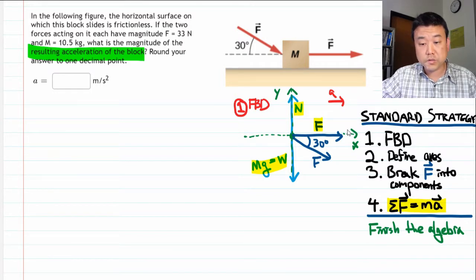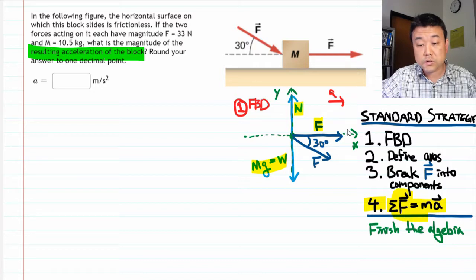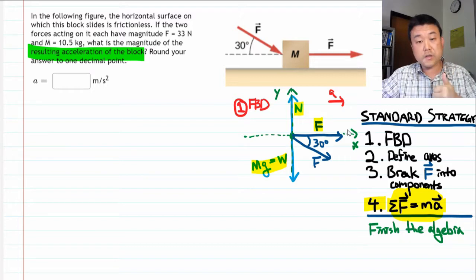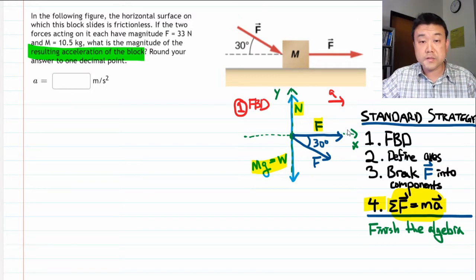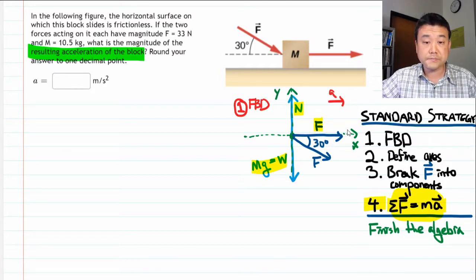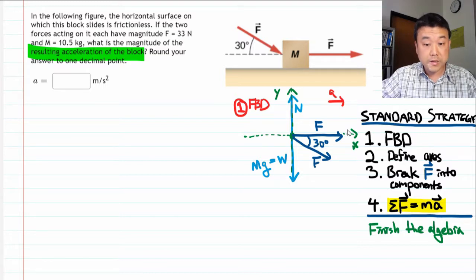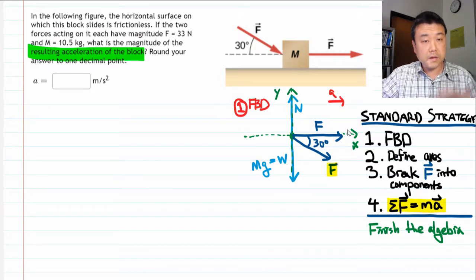The reason we break forces into components is to prepare for the next step, step number four, where the Newton's second law equation gets written each time for each direction, once for x-axis and once for y-axis. This is consistent with the mathematical behavior vectors, the independence of x and y directions. So we have one force that needs to be broken into components, and that's this other applied force F. And let me do that here.